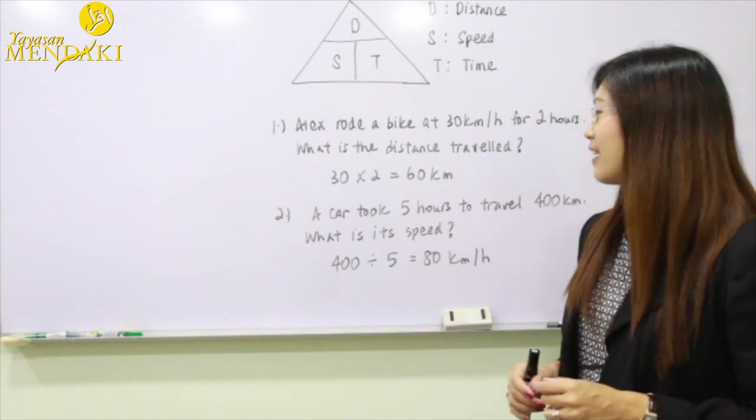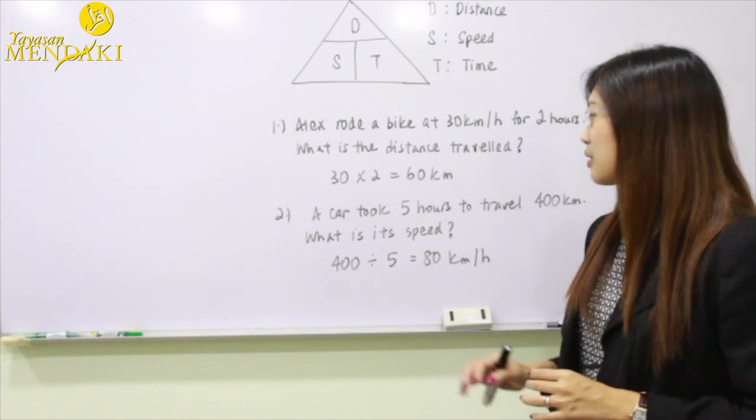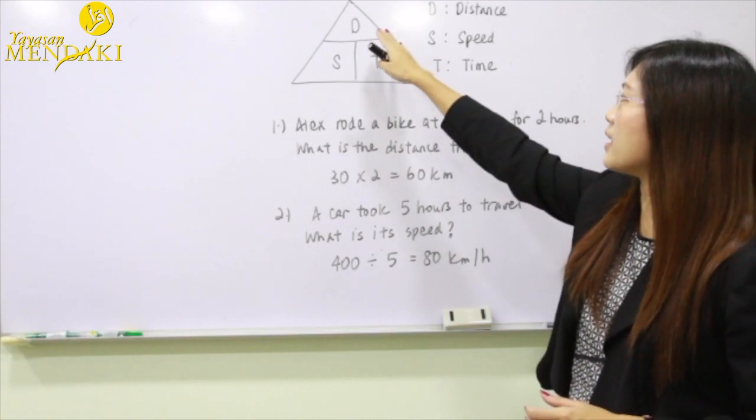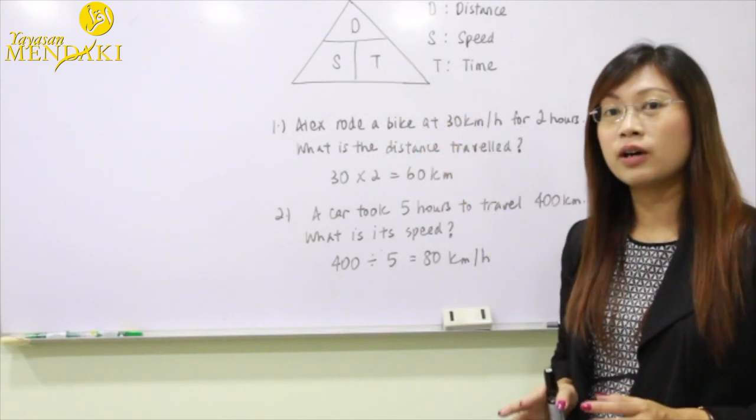Second question: a car took five hours to travel 400 km. What is the speed? To find the speed, we're going to take the distance and divide by the time. Since the distance is given as 400 km,